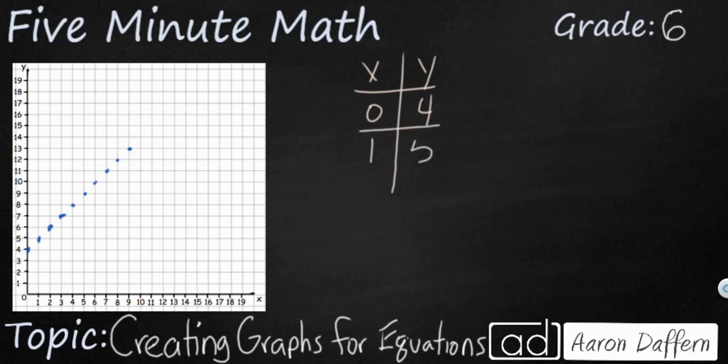When x is 1, y just bumps up 1. When x is 2, it goes up to 6. And so it's not really increasing. Every single time it's increasing by 1 if you're looking up and down.